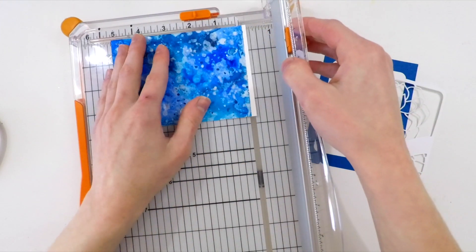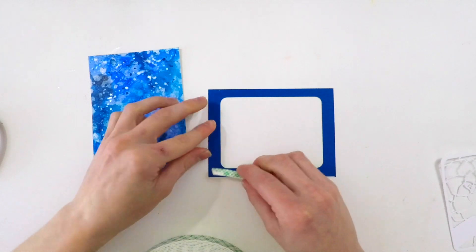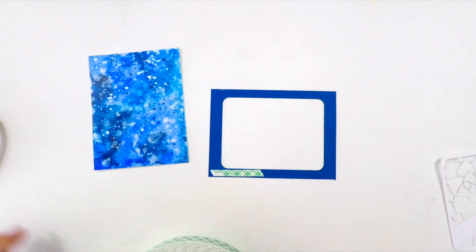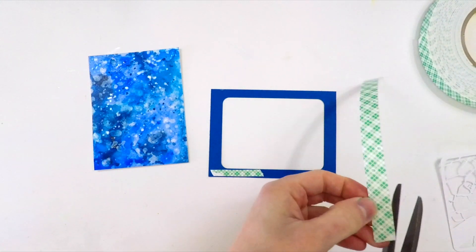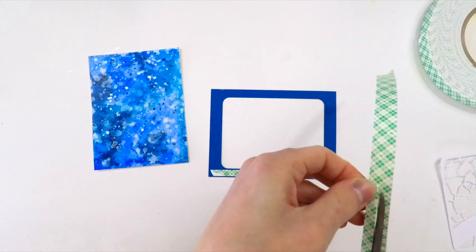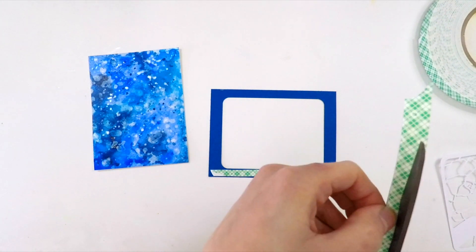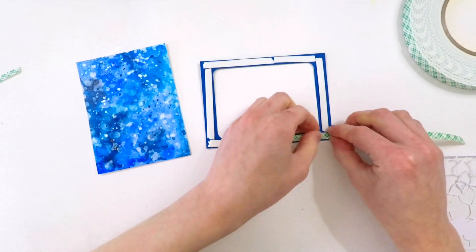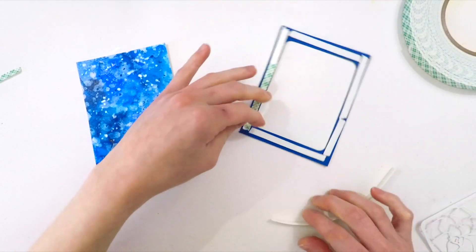Once I've trimmed down that panel, I'm going to add it to the back of my frame with foam tape. I'm going to apply two layers of foam tape to the back side of this frame. I'm going to trim down my foam tape, which is about half an inch, to about a quarter of an inch, and I'm going to double layer this foam tape.